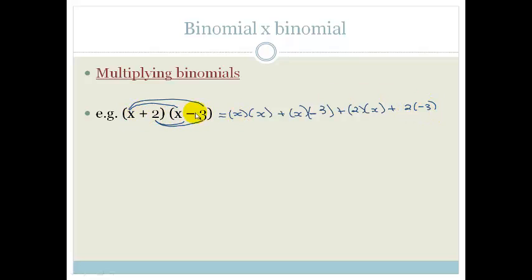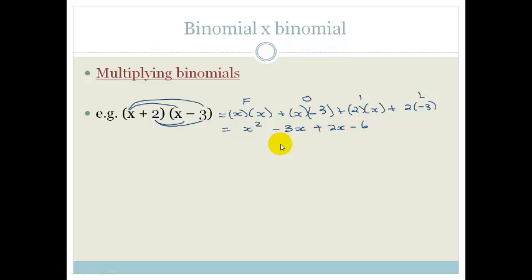Looking at this carefully, because we're multiplying two binomials, we're effectively using FOIL — first with first, outers, inners, lasts — but it's really just the distributive law. FOIL is just a mnemonic to help you remember. So: x times x is x squared, then minus 3x plus 2x minus 6. We have two like terms, so it simplifies to x squared minus x minus 6.